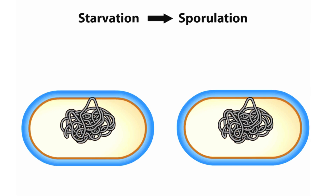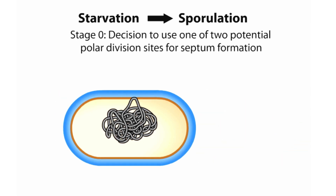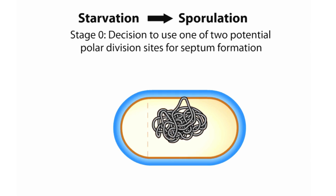Sporulation can be divided into 8 morphological stages. Stage 0 represents the point at which the vegetative cell decides to use one of the two potential polar division sites to begin septum formation, instead of the central division site used for vegetative growth.